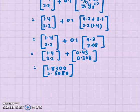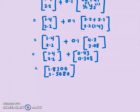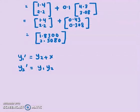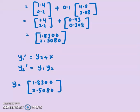So this is the second approximation. The solution to the problem — y1-prime equals y2 plus x and y2-prime equals y1 times y2 — at x equals 2.2 is approximately [1.8300, 2.5080]. Remember, if you solve this analytically your answer might be close but not accurate because we only did two iterations. The more iterations you do, the closer the solution will be to the exact solution. In the next video we'll look at how to find the error. That's all for today, see you next time.